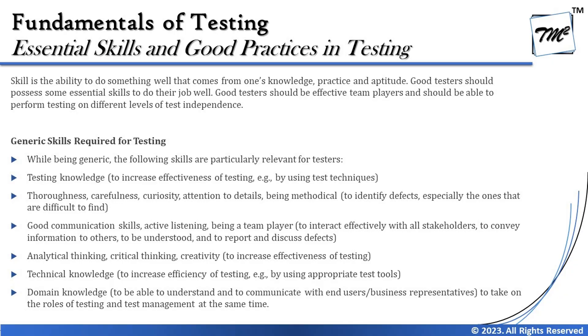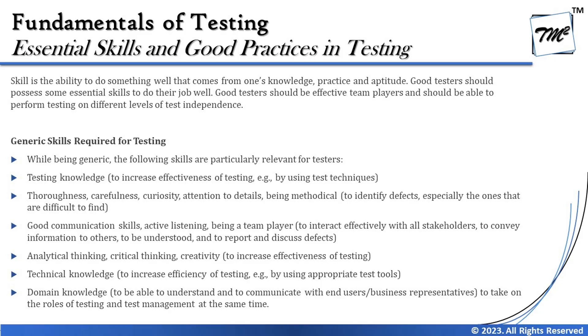Today we're talking about what skills and good practices a tester should follow. We'll cover the first part today, then look at how to work together with the team, and then what it takes to be independent from other stakeholders. A skill is defined as an ability to do something well, coming from one's knowledge, practice, and aptitude. A good tester should possess essential skills for their job, should be an effective team player, and should be able to perform testing at different levels of test independence.